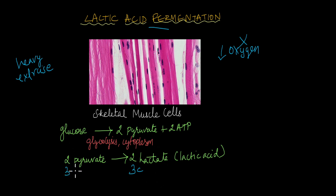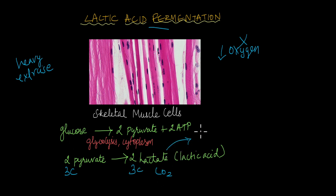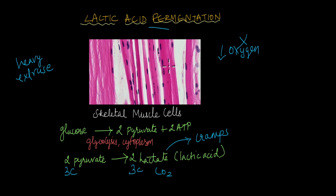Pyruvate is also a three-carbon molecule. No carbon dioxide is released here; instead, lactic acid begins to accumulate within the muscle cells, and the accumulation of this lactate is what causes muscle cramps when we are exercising heavily.